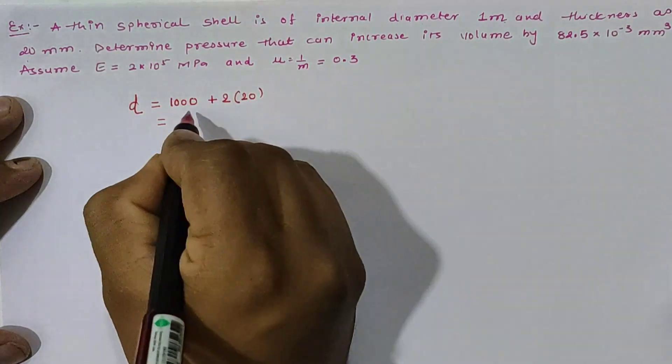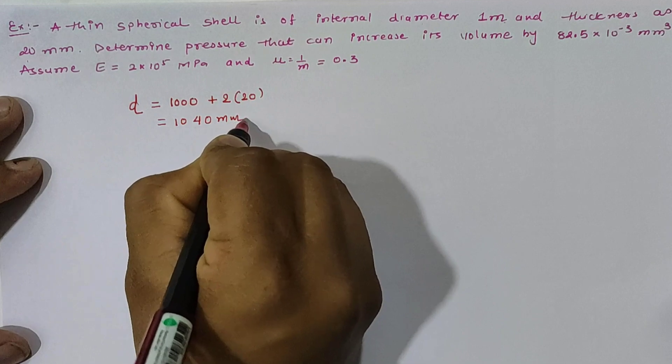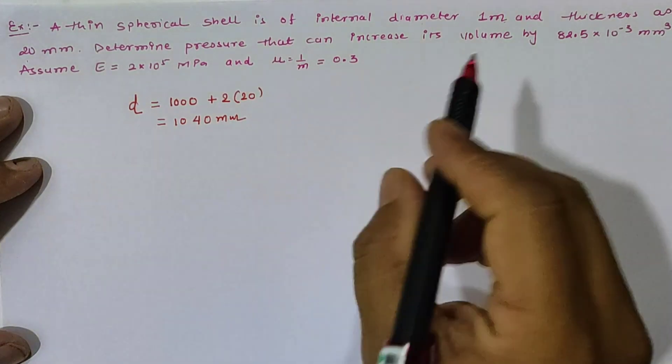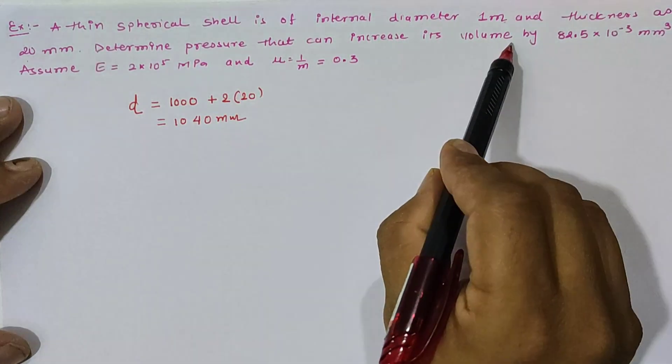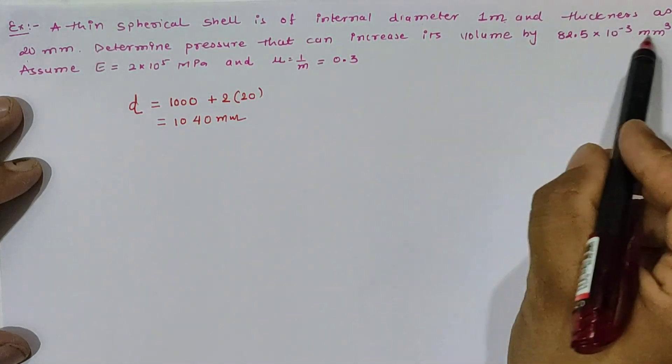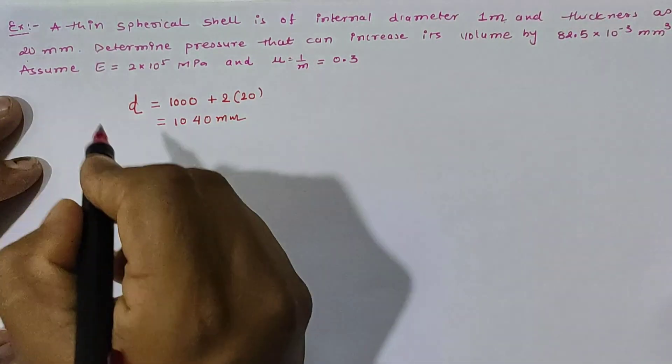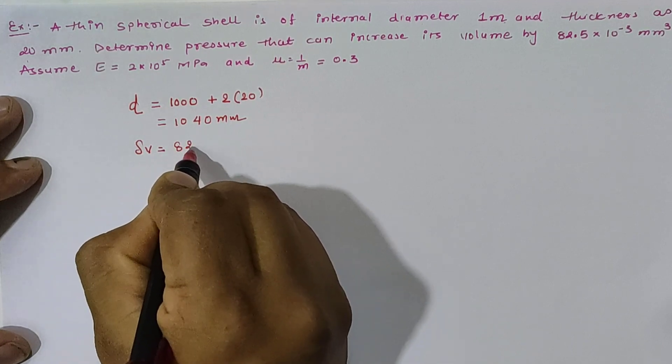Now next data is given as pressure which can increase the volume by the value 82.5 × 10^-3 mm³. So we have given Δv as 82.5 × 10^-3 mm³.